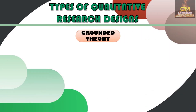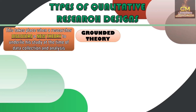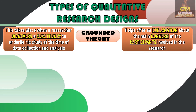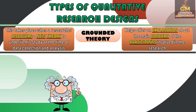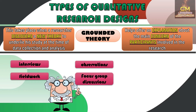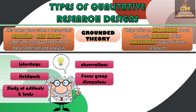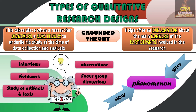Lastly, we have grounded theory. Grounded theory takes place when a researcher discovers a new theory to underlie their study at the time of data collection and analysis. It also helps offer an explanation about the main concern of the participants involved in the research. Through various means of data collection — such as interviews, observations, fieldwork, focus group discussions, and study of artifacts and text — the researcher is able to discover an idea that explains the how and why behind a particular phenomenon.